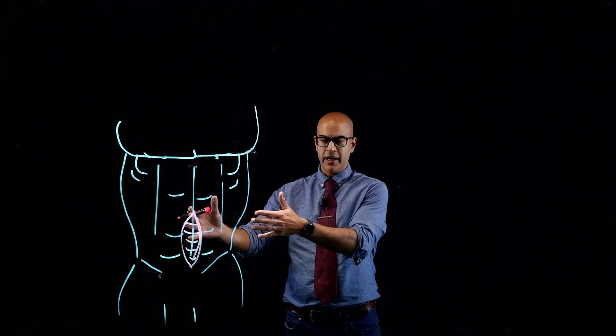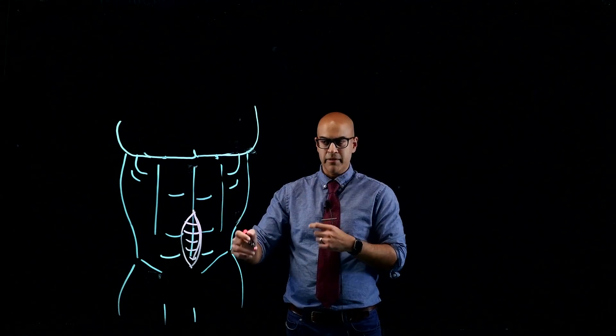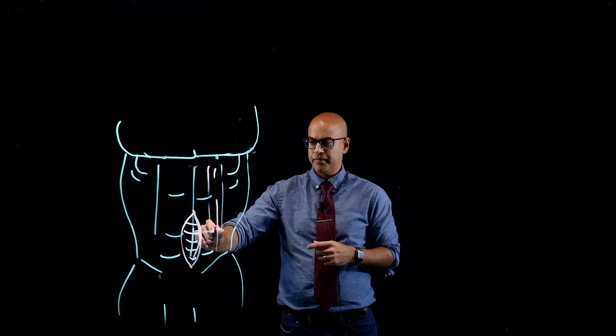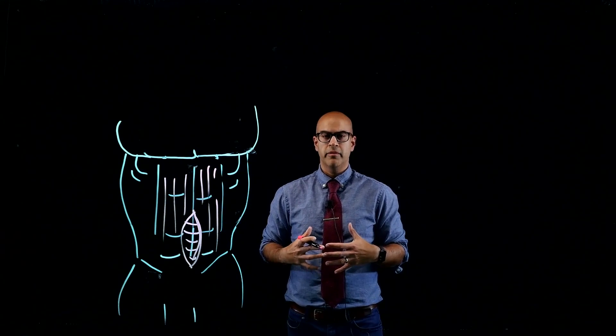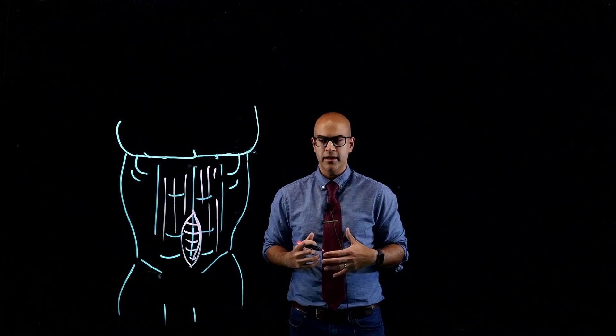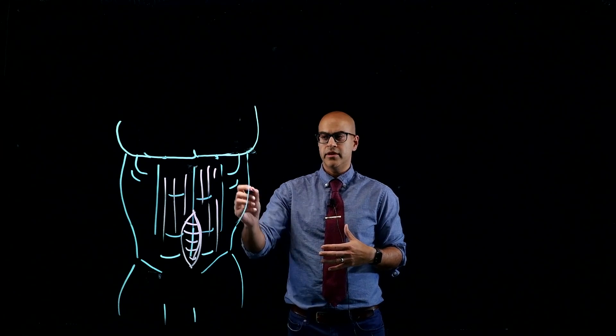The way your abdominal wall works is you have your six-pack muscles in the middle. Your six-pack muscles are actually two long tubes. What they do is they help your body move up and down like this. But what also happens is you have a series of muscles in the side of your abdominal wall.